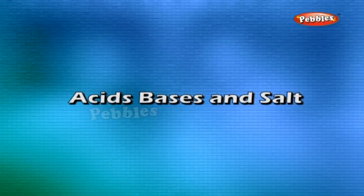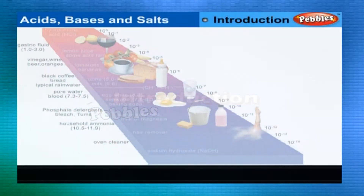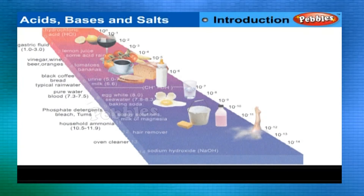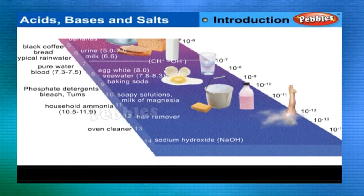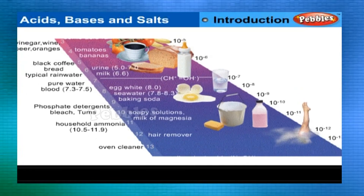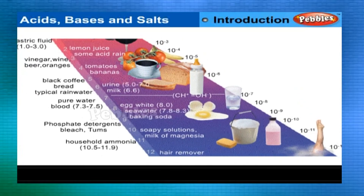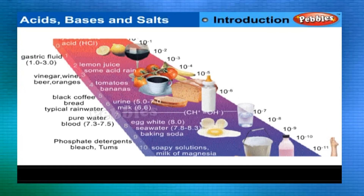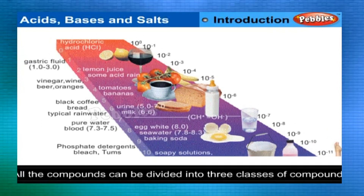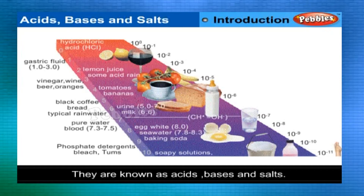Acids, Bases and Salts — Introduction. A large number of compounds can be made by the combination of various elements. More than 3 million compounds are already known to us, and it is practically impossible for anyone to learn the composition and properties of each compound. Therefore, all the compounds can be divided into three classes: acids, bases and salts.